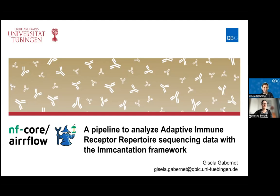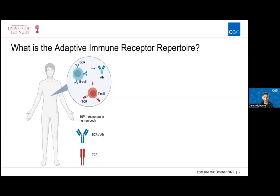Thanks Franziska for the nice introduction. I'll present NFCore Airflow, and first of all I will start with defining what the AIR in Airflow stands for. AIR stands for Adaptive Immune Receptor Repertoire, and that's the collection of membrane proteins found on the surface of B cells, where they are called BCRs, and on the surface of T cells, where they are called TCRs or T cell receptors.